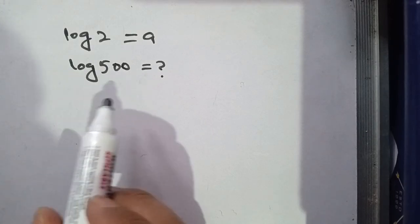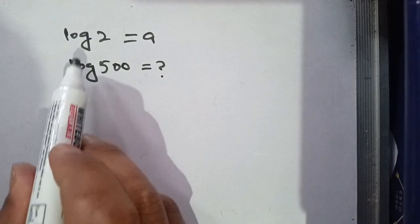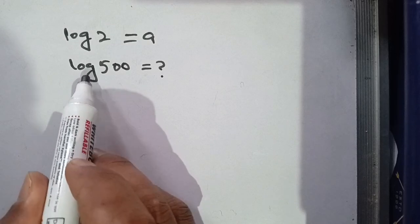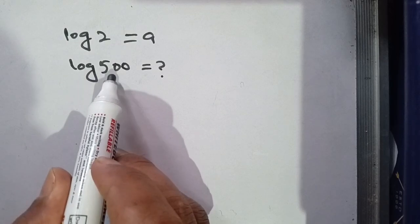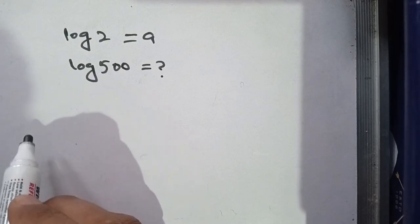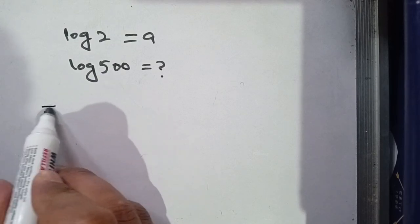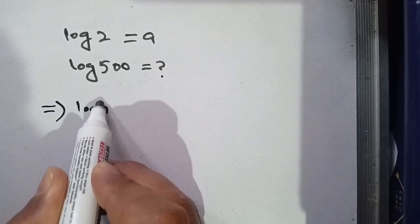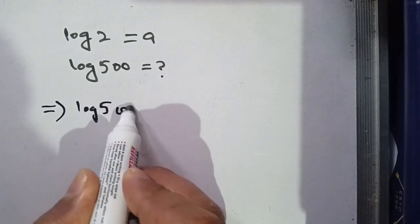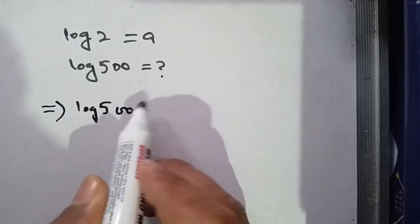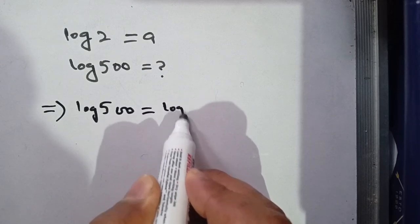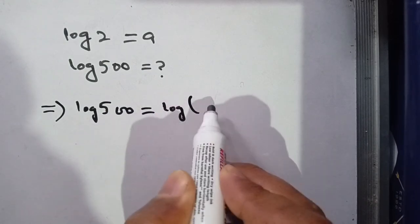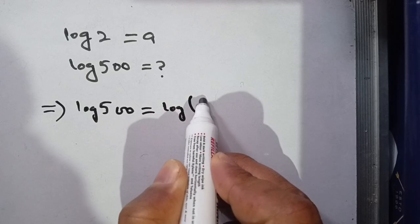Hello everyone. In today's video we are going to solve this problem: if log of 2 is equal to a, we have to find the value of log of 500. Let us solve this. First of all, we take log of 500. It can be broken down in terms of 100.